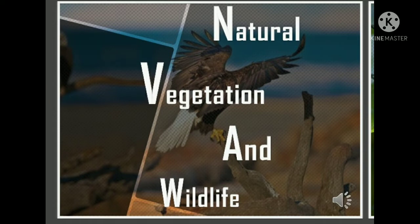What do you mean by natural vegetation? Natural vegetation means plants — life forms in the sense of plants. And what do you mean by wildlife? Animals, insects and birds.